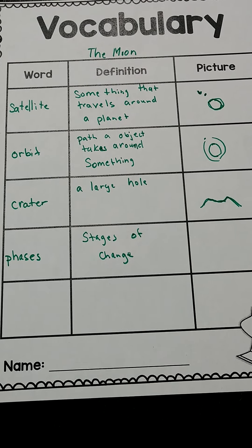So we have: satellite — something that travels around a planet; orbit — the path an object takes around something; crater — a large hole; and then phases — stages of change. The moon goes through different phases throughout the 27 days that it orbits the Earth. It takes 27 days for the moon to go around the Earth, and it has phases.